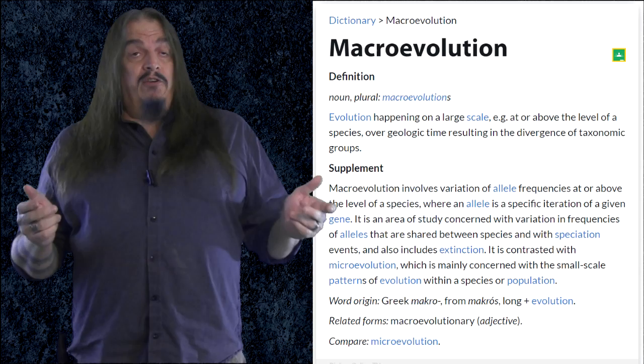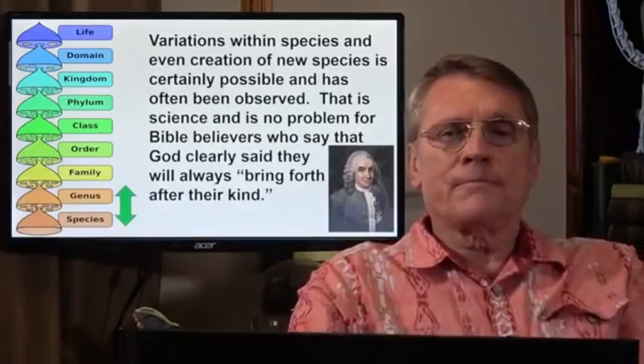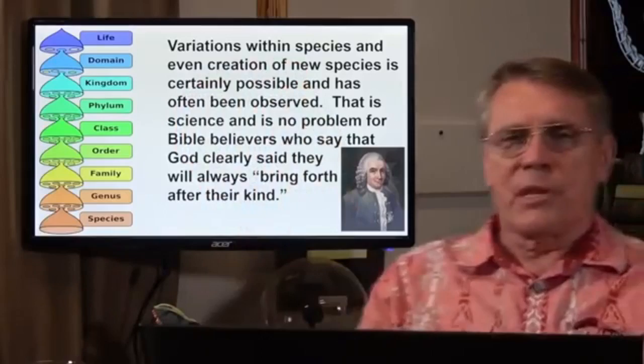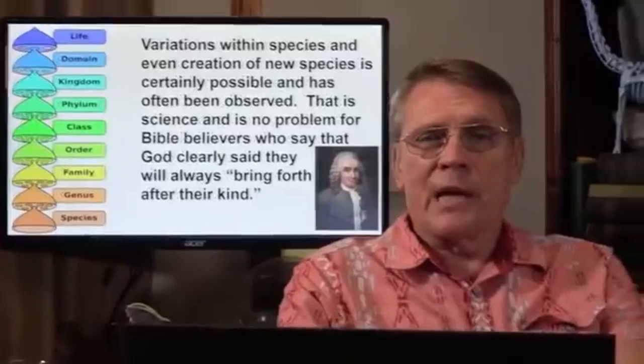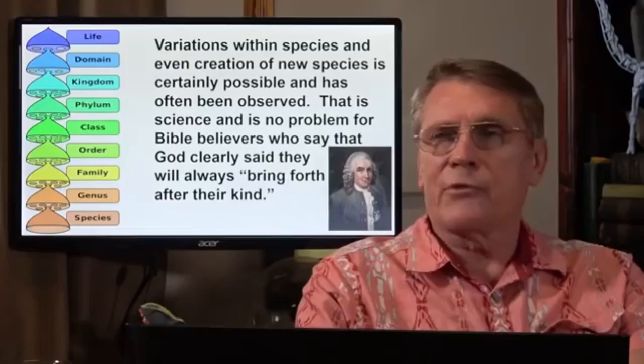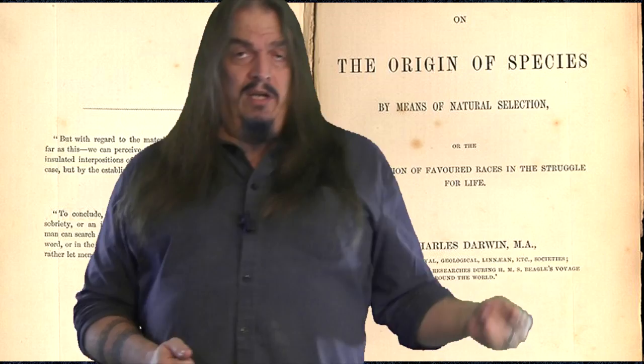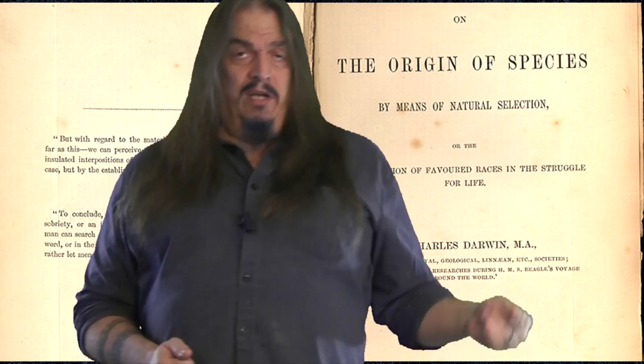But creationists have already explained that they accept evolution even beyond that. Probably the kind indicates somewhere around the family or genus level. Everything above that is speculation. So microevolution is variation within species and macroevolution is the creation of new species. Variations within species and even creation of new species is possible and has been observed. That is science and is no problem for Bible believers who say that God clearly said they will always bring forth after their kind. Exactly. That means you accept the origin of species by means of natural selection. Or to put that another way, it means that you actually accept macroevolution, and not just at the species level, but even higher at the genus or family level, if not higher still, especially in the case of sparrows.